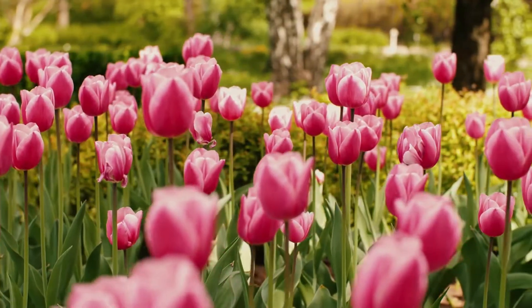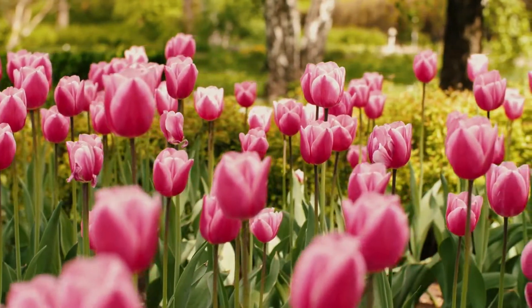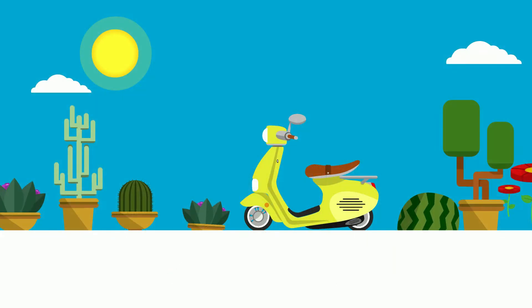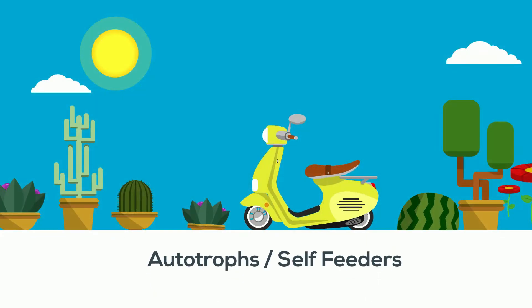The plant kingdom is made up of multicellular eukaryotic organisms. Eukaryotic means that they have a nucleus and membrane-bound organelles. They are also autotrophs, which means that they are self-feeders.